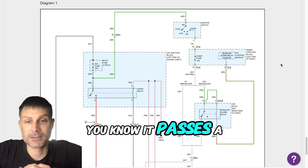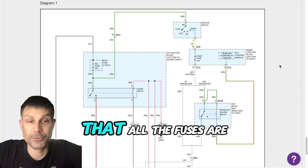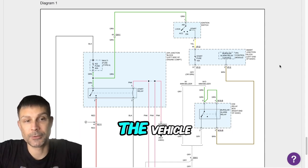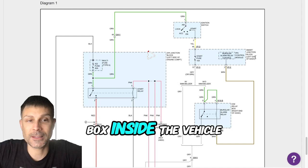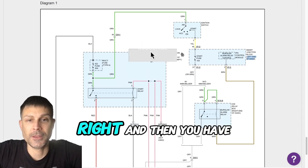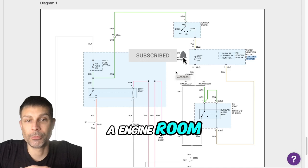I gotcha. Well, if the battery is good, you know it passes a load test, I would just make sure that all the fuses are good. So you have a couple different fuse boxes on board the vehicle. You have a smart junction box inside the vehicle on the left side of the dash, and then you have an engine room junction block on the left side of the engine compartment.